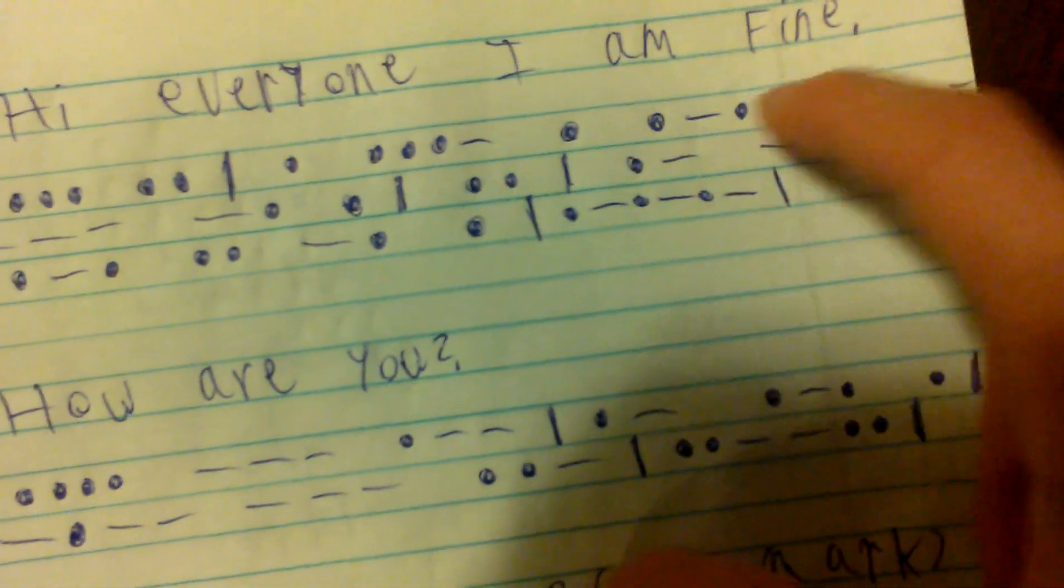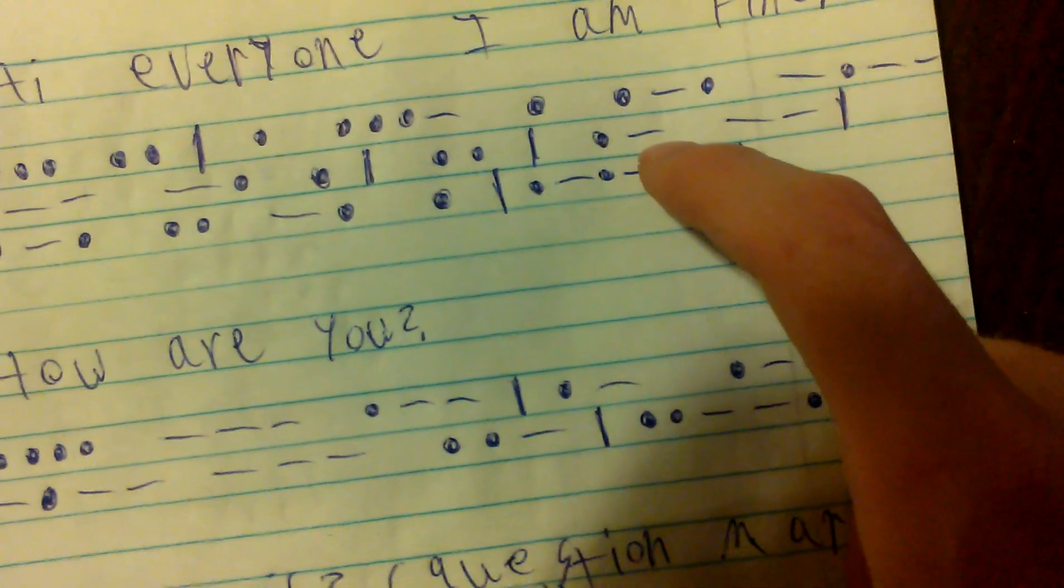Right here I put 'hi everyone I am fine' with a period. So right here I have four dots, two dots - that's H, that's I, and there's a space. That's E, V, E, R, Y, O, N, E, space, I, space, A, M, space.